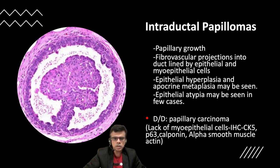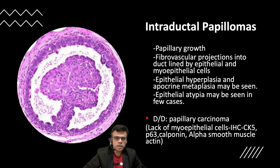Some cases may show epithelial hyperplasia and apocrine metaplasia as secondary changes. Epithelial atypia may be seen in a few cases, and epithelial atypia may even give rise to cancerous changes — it may show upgradation to DCIS and even invasive cancers.